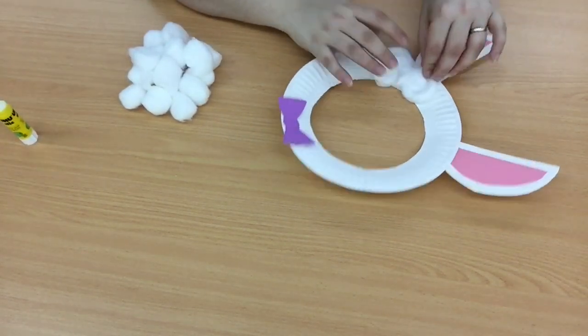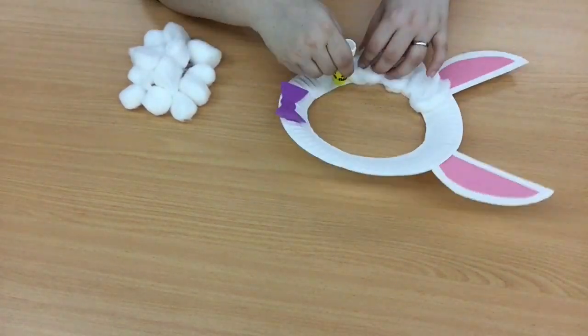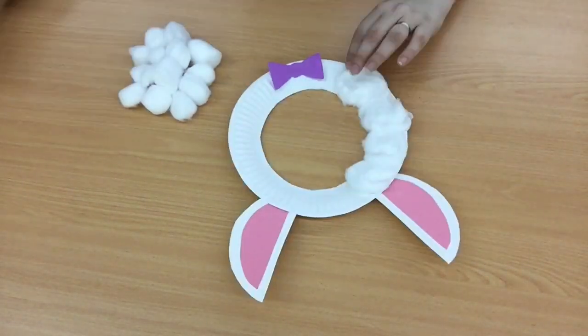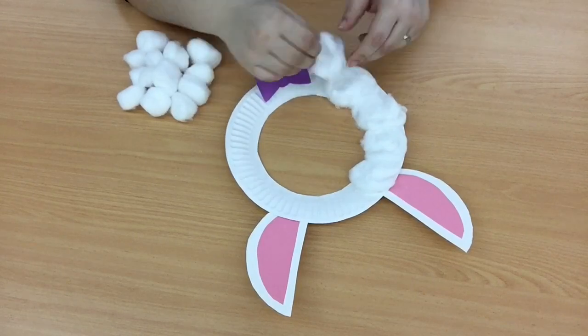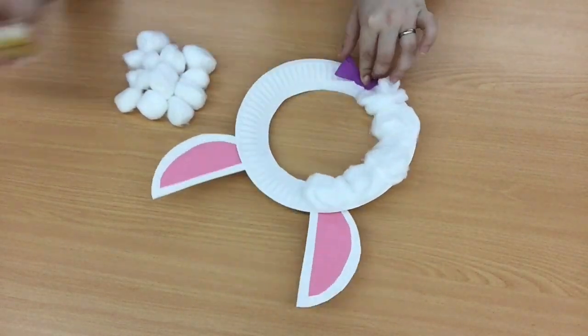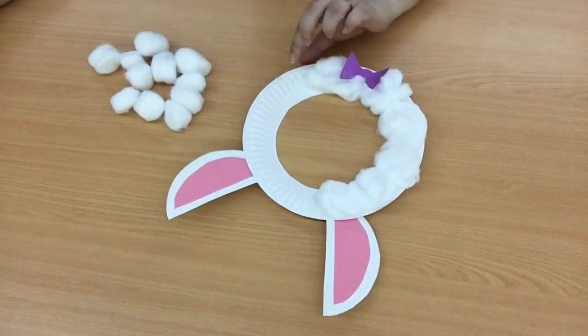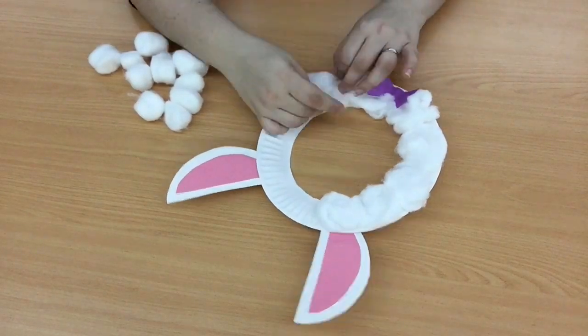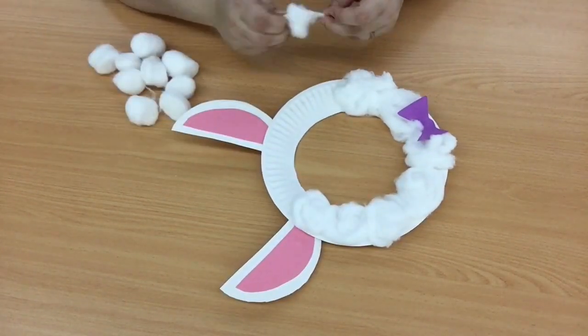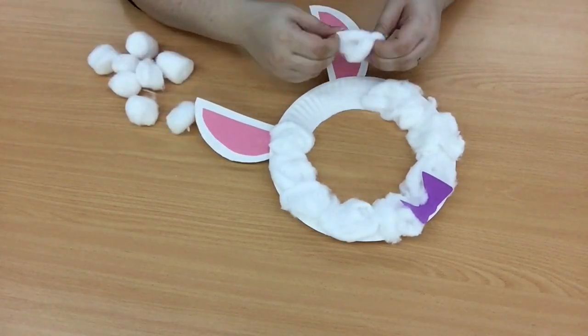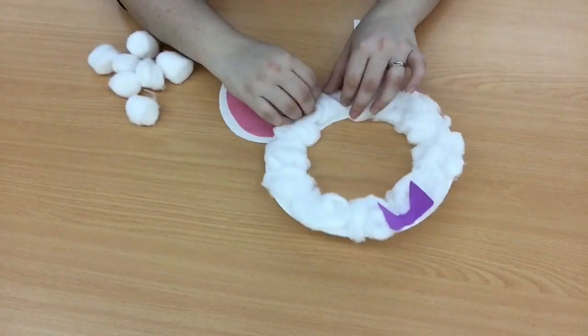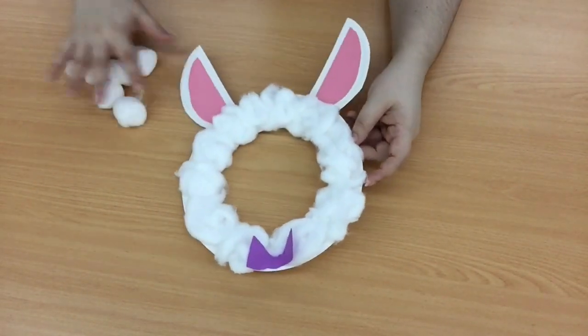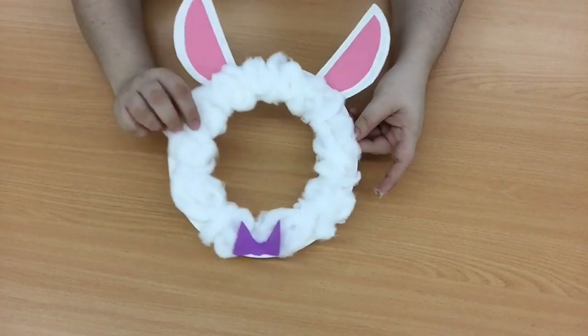And then we repeat. Round and round we go, making our bunny extra fluffy. And be careful around your bow tie. There we go. There's our fluffy bunny frame.